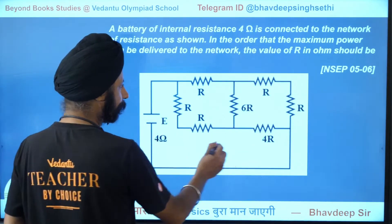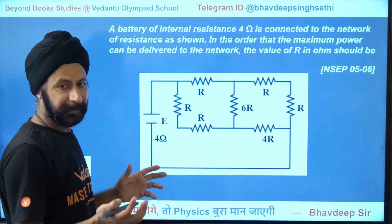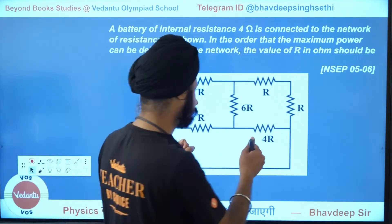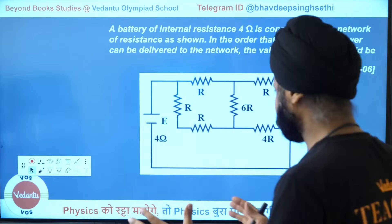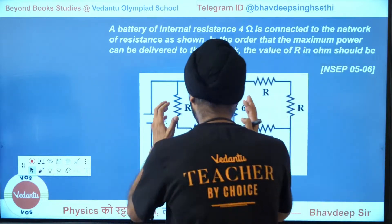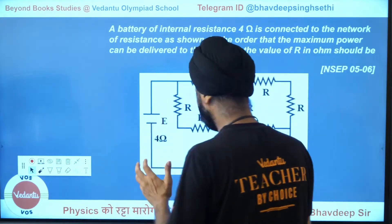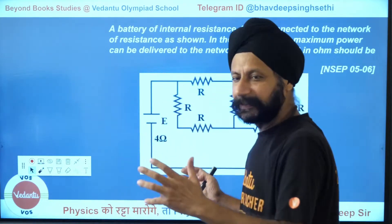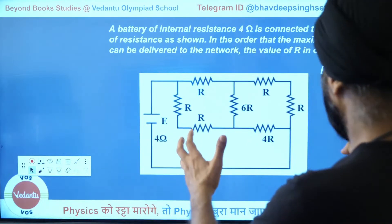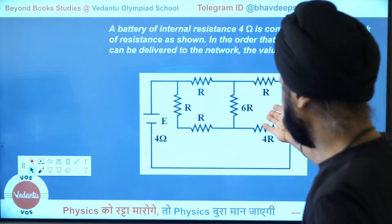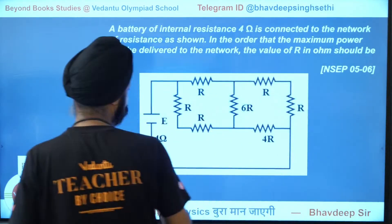So for maximum power, all this resistance network has to equal 4 ohms. It's a little complicated, but if you step back and look at the bigger picture — if you look closely you may not visualize it, but from far away — wow, that's a Wheatstone bridge. And it's a balanced Wheatstone bridge.